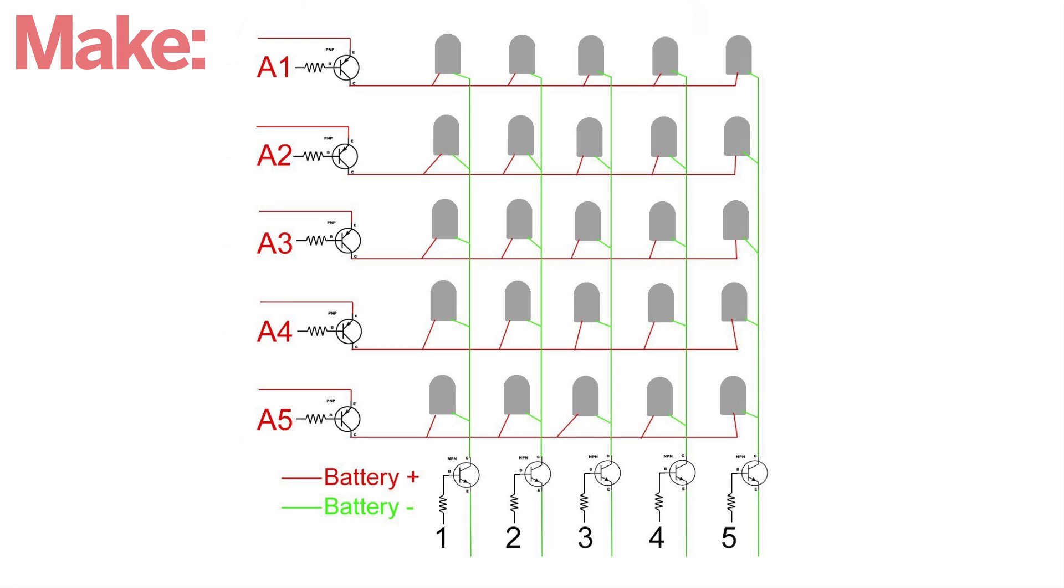In this configuration, I have a set of NPN transistors connected between each set of cathodes and ground, and a PNP transistor connected between each set of anodes and the positive supply. The base of each transistor is connected to the digital pins with a 1K resistor.